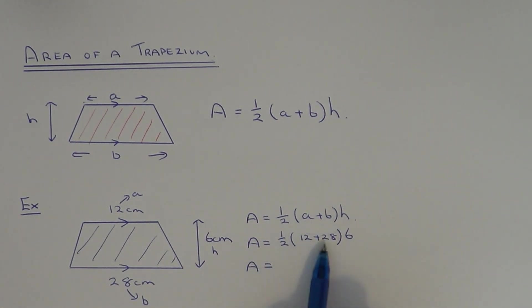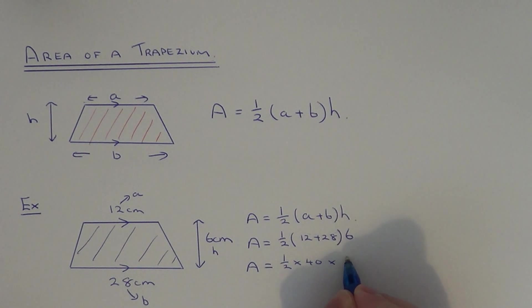The next thing we need to do is work out the bit inside the bracket. Twelve add twenty eight is forty. And this half and this six are multiplying the bracket. So we have half times forty times six.